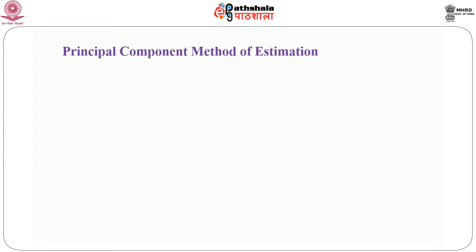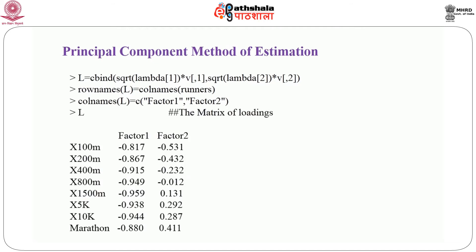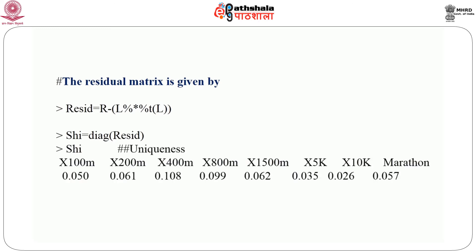Firstly, we are going to look at the principal component method of estimation. For that we find the matrix L. To give a better understanding, the rows of the matrix L are given the variable names and the columns are given the names Factor 1 and Factor 2. Here is the matrix L, that is the matrix of loadings. The residual matrix is given by subtracting from the correlation matrix R the matrix L*L'. The diagonal components of this residual matrix are the estimates of the uniqueness. We extract the diagonal components from this residual matrix using the command diag in R and store it in the R object psi. Here are the estimates of the uniqueness.